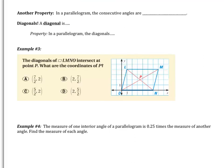In a parallelogram, consecutive angles are supplementary. Opposite angles are congruent — the ones across from each other. The ones next to each other are supplementary; they add up to 180 degrees.